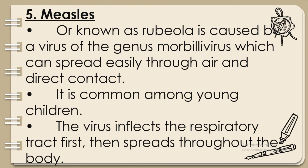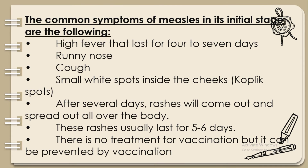Number five: Measles, also known as rubeola, is caused by a virus of the genus Morbillivirus, which can spread easily through air and direct contact. It is common among young children. The virus infects the respiratory tract first, then spreads throughout the body.